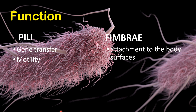Functionally, both are far different from each other. Pili perform two functions: first, gene transfer or bacterial conjugation from one bacterial cell to another, and second, motility. On the other hand, fimbriae help to adhere to body surfaces.